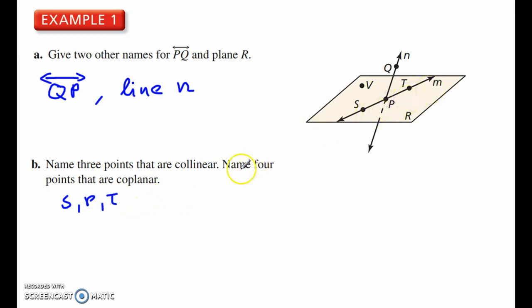And then name four points that are coplanar on the same plane. So collinear are S, T, and P, coplanar are S, T, P, and V.